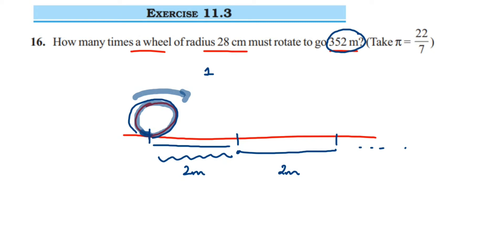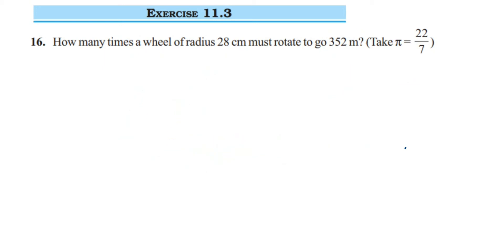First, we are going to find out the circumference of the wheel, because the radius is given. Once we have the circumference, since we know the total distance is 352 meters, we divide that by the circumference — which is the distance covered in one rotation — and we will get the number of rotations.